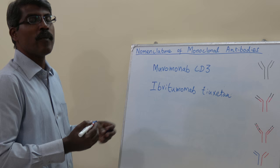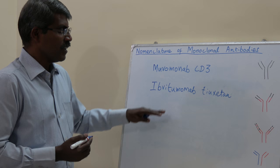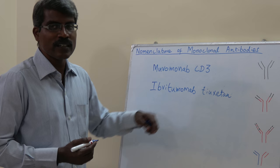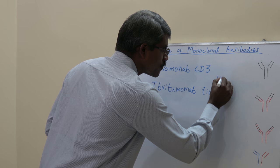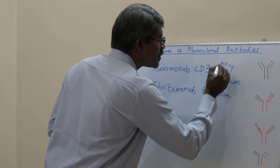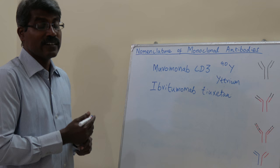An example is Ibritumomab tiuxetan. You can see there are two words in this name. The first word ends with '-mab', indicating it is a monoclonal antibody. The second word indicates the substance linked to it — in this case, an isotope, yttrium, which is linked to the monoclonal antibody.